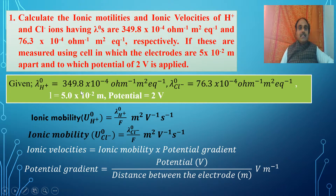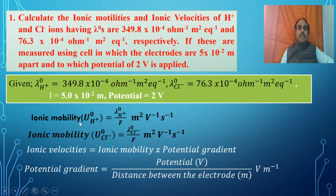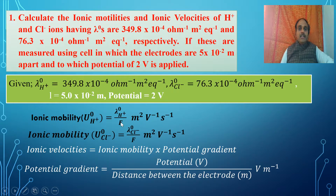Using these data, we calculate ionic mobilities and ionic velocities of H⁺ and Cl⁻. Ionic mobility can be calculated using the equation: λ° of the ion divided by 96500 coulombs per equivalent, that is 1 Faraday.